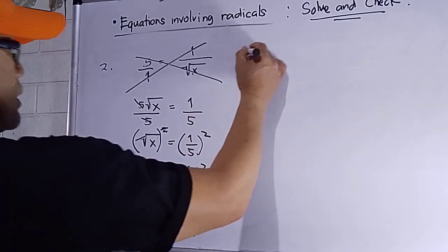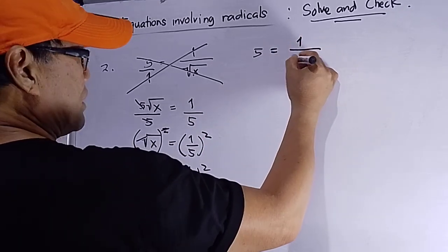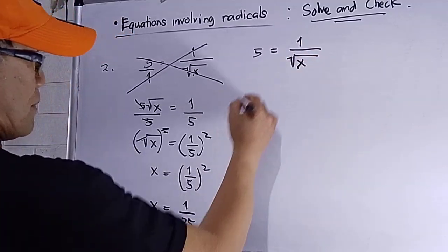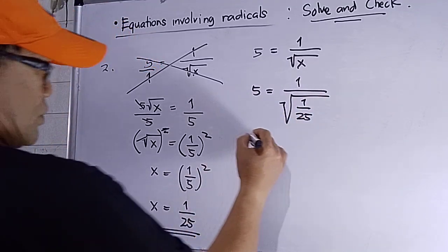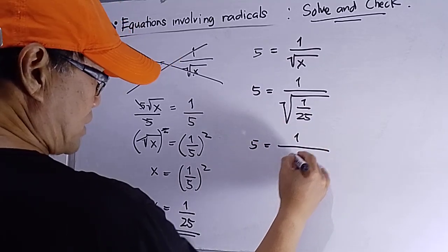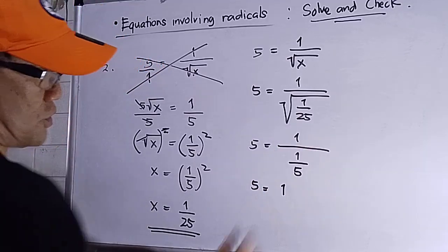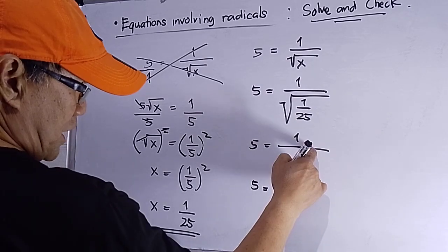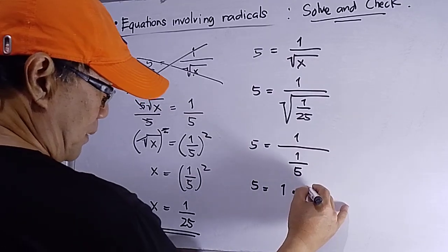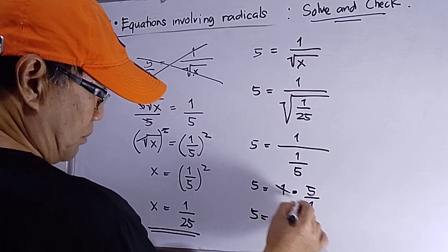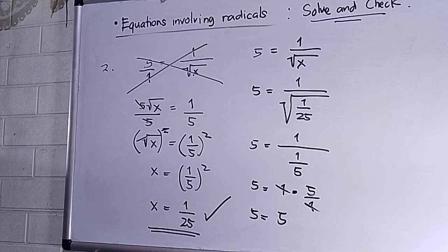Let's check by plugging x = 1/25 into the original equation: 5 equals 1 over square root of 1/25. The square root of 1 is 1 and square root of 25 is 5, so we get 5 equals 1 divided by 1/5. Dividing by a fraction means multiplying by its reciprocal: 1 times 5/1 equals 5. So 5 equals 5, therefore x = 1/25 is correct.